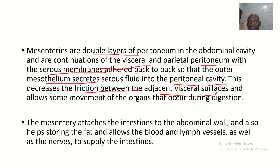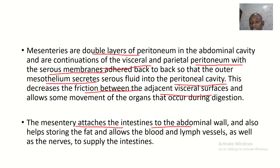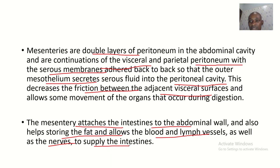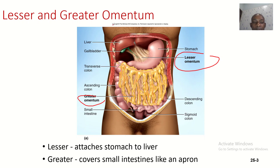Mesenteries attach the organs to the posterior abdominal wall and allow the movement of these organs without them going out of place. A mesentery also helps in storing fat — they are made up of fat — and they allow blood vessels, lymph vessels, and nerves to supply the intestine. Those are the various roles of the mesentery.